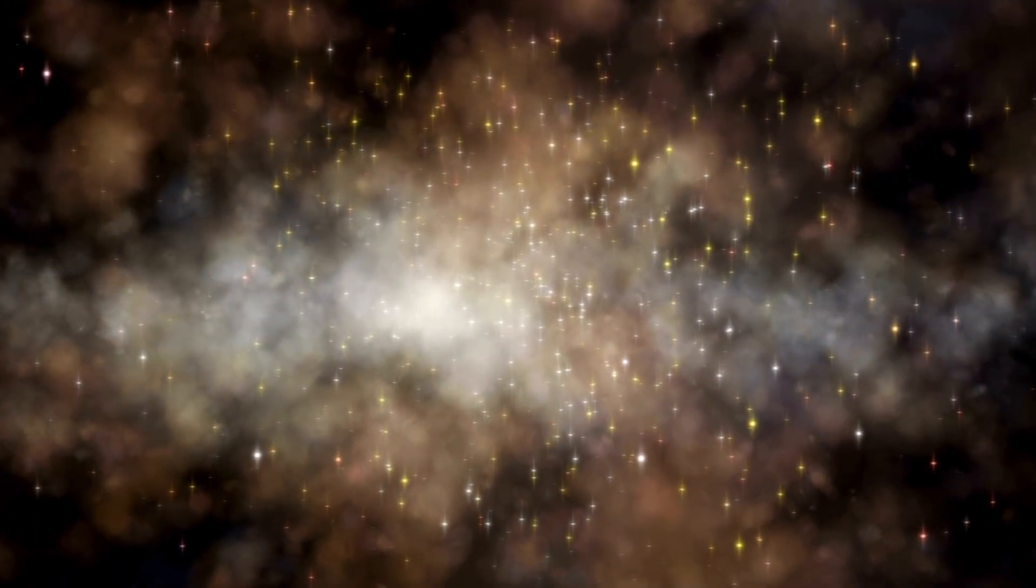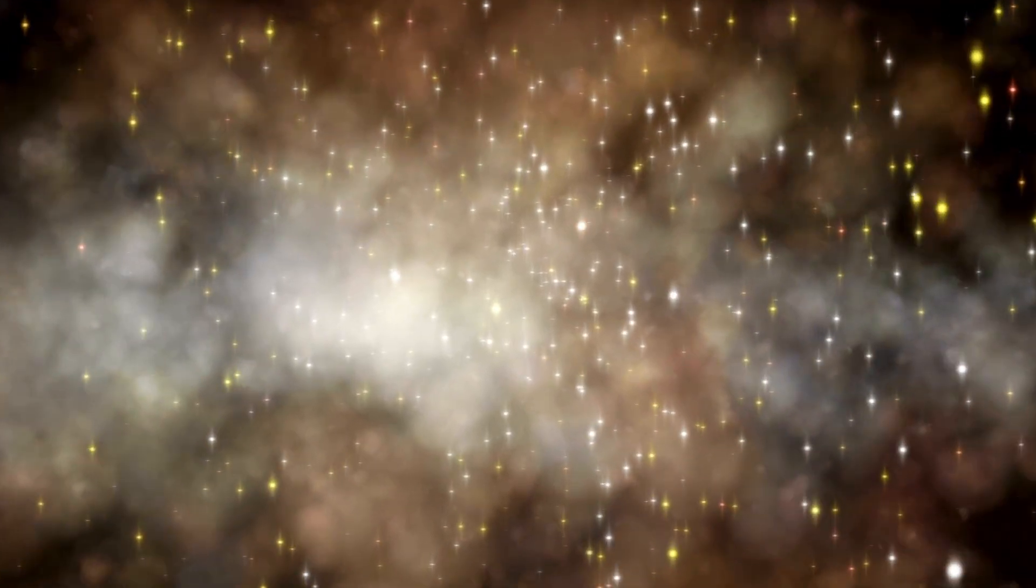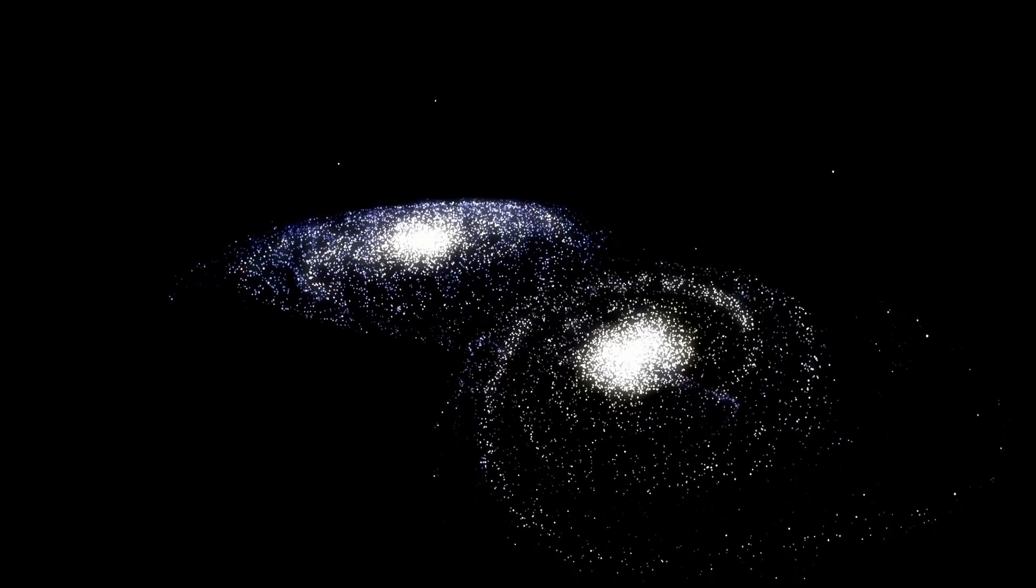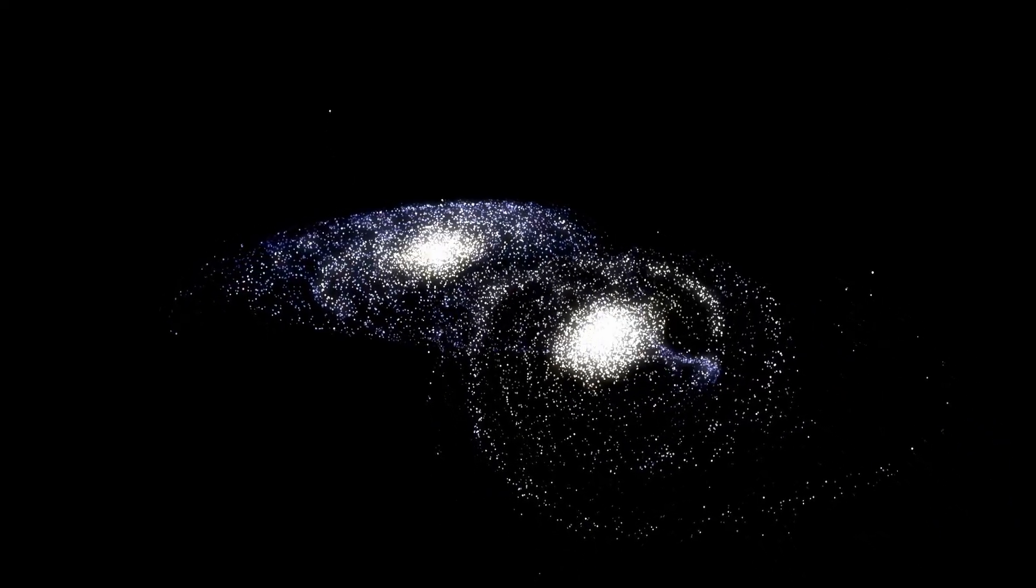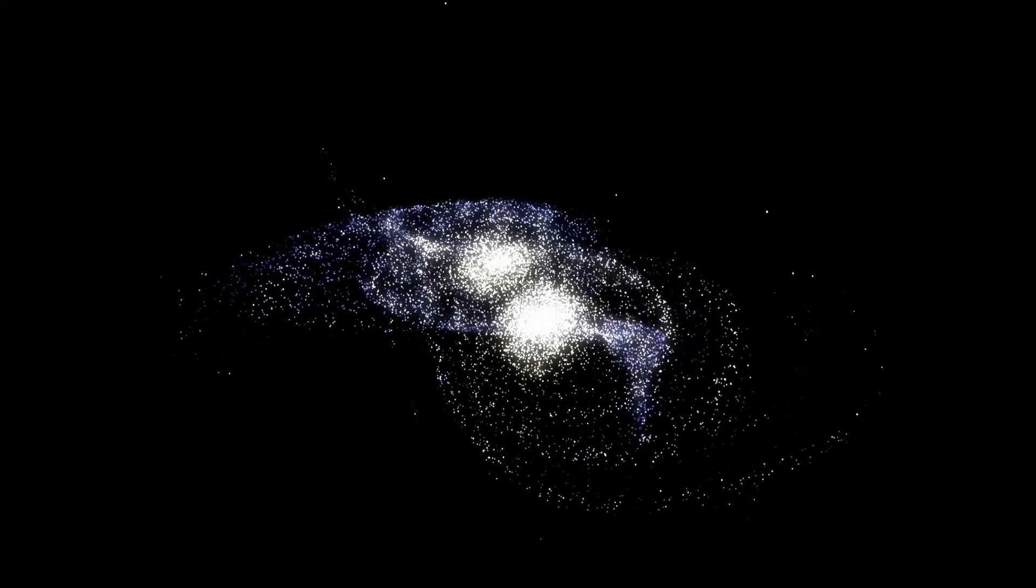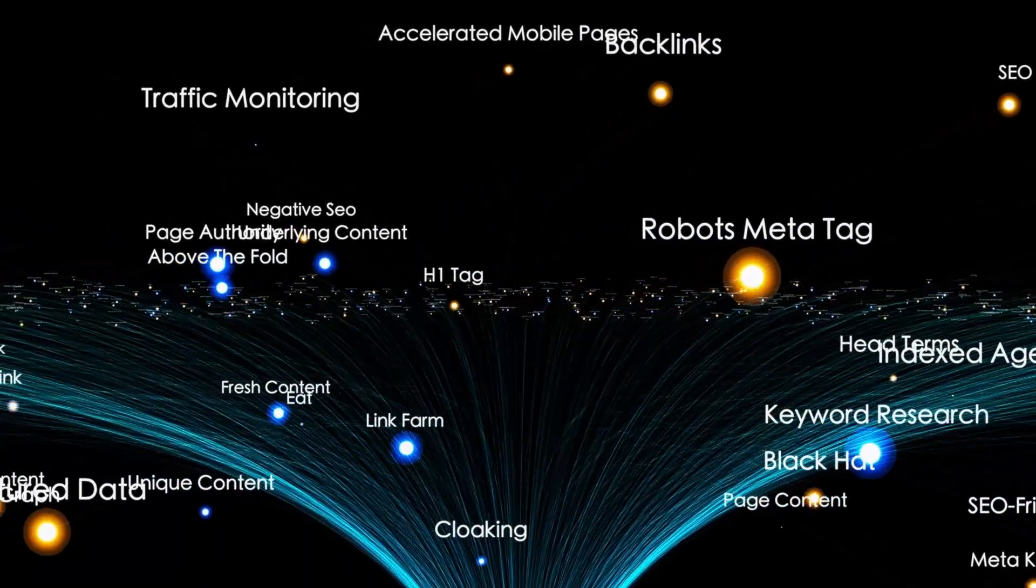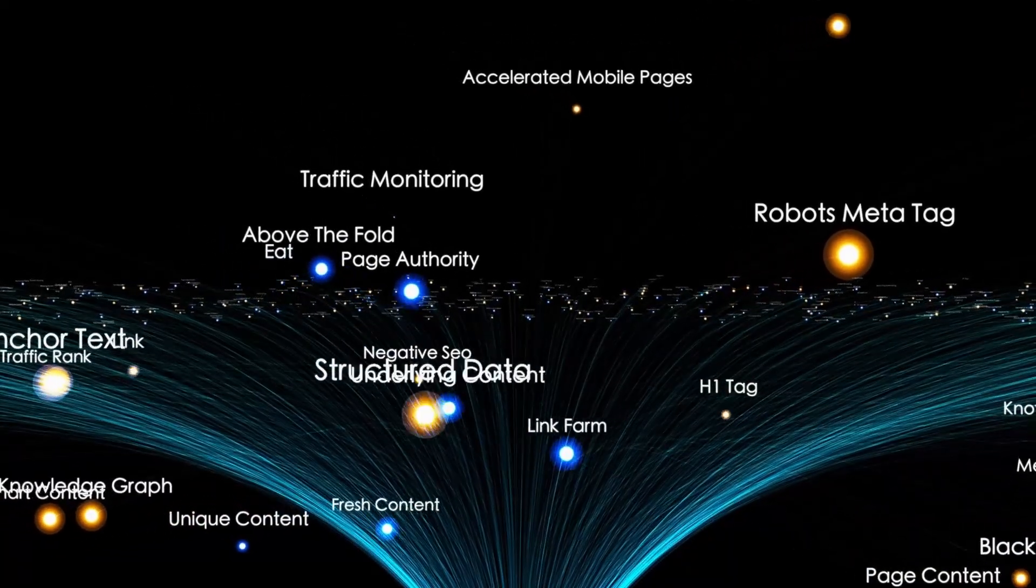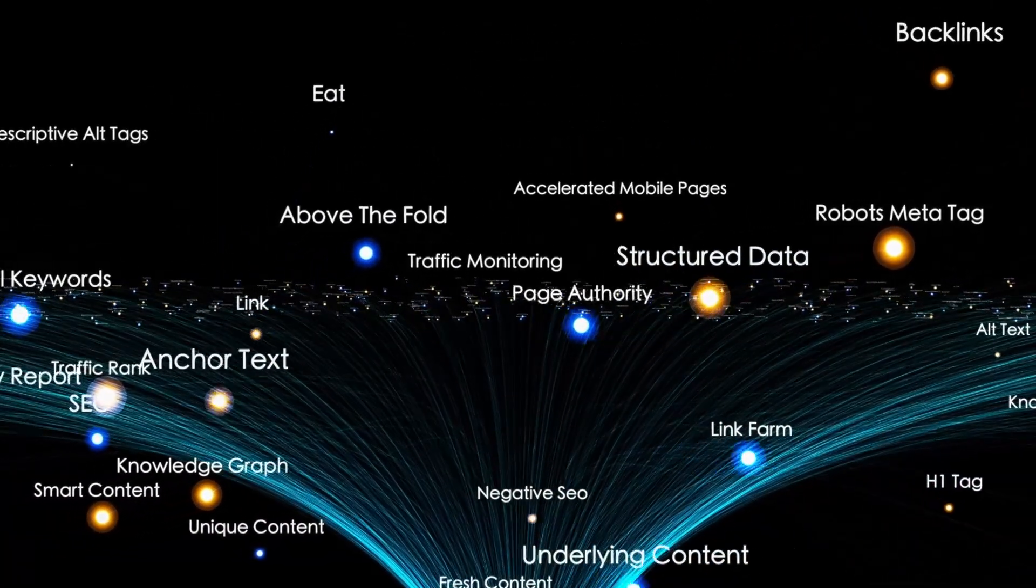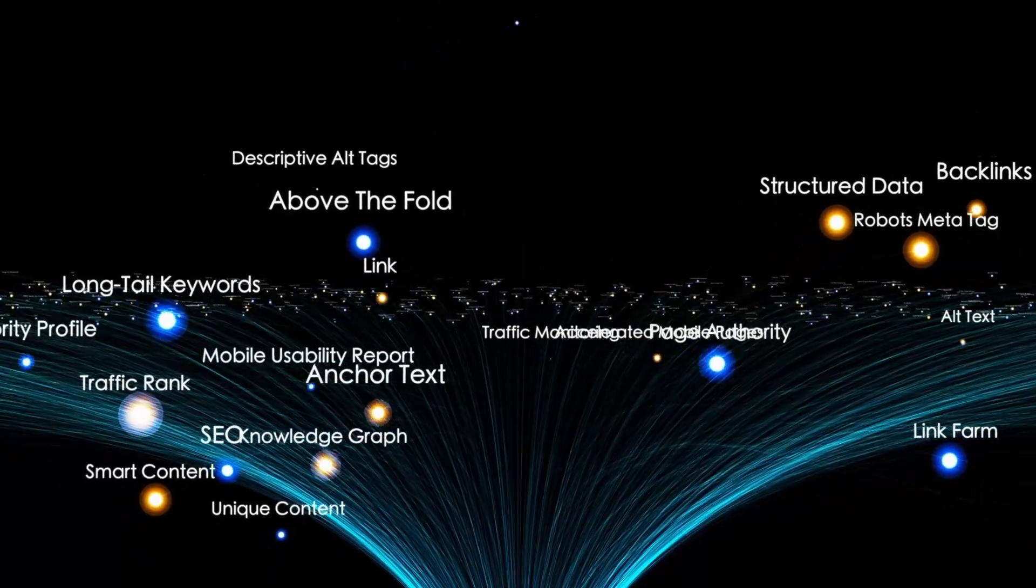Within hours of the split, both pieces were actively maneuvering using their own propulsion systems. We're not watching a comet fall apart. We're watching a spacecraft that just divided itself into two operational vehicles, each apparently capable of independent navigation and mission execution, and both are heading directly toward Earth on trajectories calculated to arrive at our planet from different directions simultaneously.